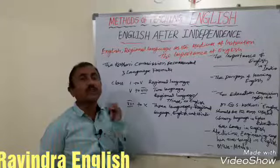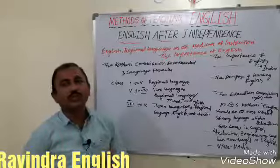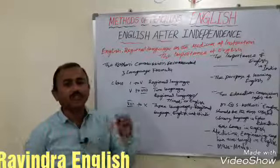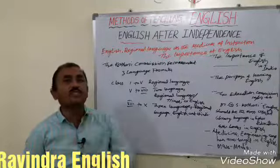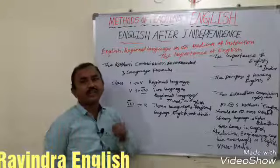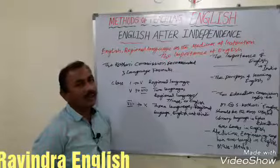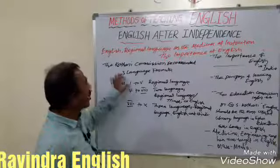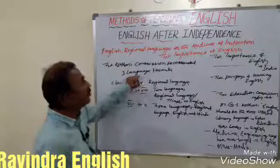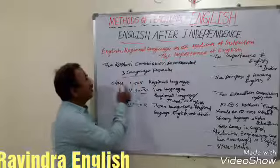At the national level of education, up to the 6th grade, regional language is the medium of instruction at the university stage — no regional language. The national policy of education recommended two languages. The Kothari Commission recommended the three language formula.